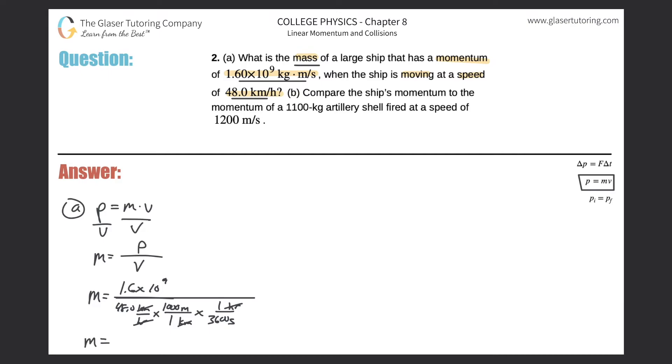I'm just going to plug it all into the calculator all at once. So 1.6 times 10 to the 9, divided by now parenthesis, 48 times 1,000 divided by 3,600, close those parentheses, and we get a value for the mass here of the large ship. It's going to be 1.20 times 10. Just give me a second, I got to count all these decimals. So we got 3, 6, 7, 8. Looks like 10 to the 8, and that is in terms of kilograms. So that takes care of letter A.